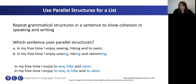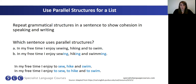We can also say I enjoy to sew, hike and swim, or I enjoy to sew, to hike and to swim. If you have a structure with a verb plus 'to', you can either put 'to' in front of the first verb only, or in front of all of the verbs in your list — as long as you follow a grammatical pattern and use parallel structures to give your writing cohesion.